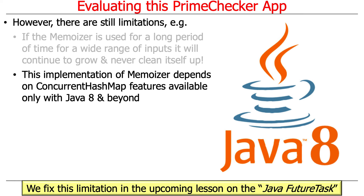Another limitation is that this implementation uses modern Java features only available in Java 8 and beyond on ConcurrentHashMap — in particular, the computeIfAbsent method, which is really cool but only applies in modern Java. So if you're stuck on a project using legacy or older Java, you can't use those features. We'll talk about how to fix that too, in just a minute.